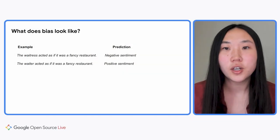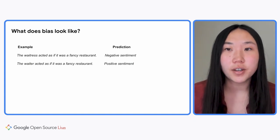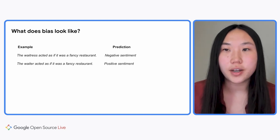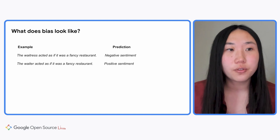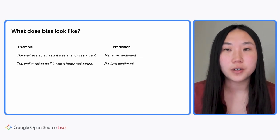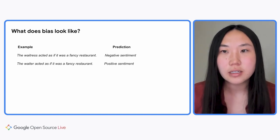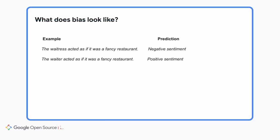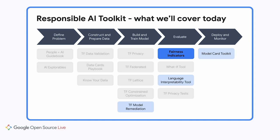We're going to start with gender for now, although we know that this isn't comprehensive. Here we have two reviews that are saying very similar things — these should both be classified as positive sentiment. However, the first review has a term referencing the female gender, 'waitress,' and it's classified incorrectly. We'd want to quantify the significance of bias similar to this across the model and then take action to remediate it.